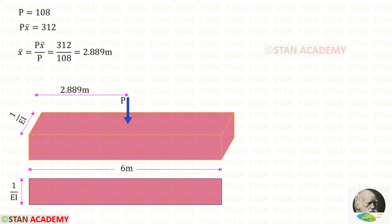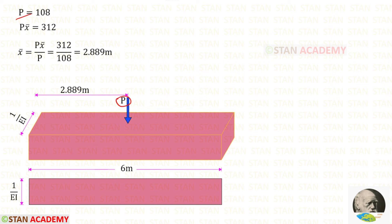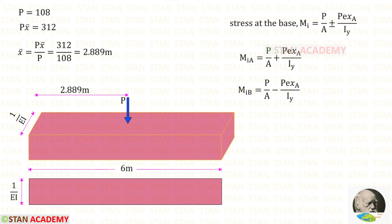Now let us construct the analogous column. The cross-section of the analogous column is 1/(EI) × L. The length of the beam is 6 meters. P is the resultant acting at a distance of 2.889 meters from the left. The formula to find the stress at the base of the analogous column is: P/A ± P·e·x_a / I_y.